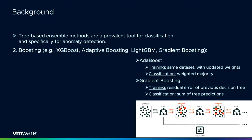The other method is the boosting method. There are many algorithms in that area, such as AdaBoost, gradient boosting, XGBoost, LightGBM, and others. The main idea is to train each decision tree according to the classification result of the previous one. In AdaBoost, we train using the same dataset but with different weights calibrated by the previous tree's result. In gradient boosting, we train the current tree on the residual error of the previous tree. The final classification is a weighted majority for AdaBoost, or the sum of all tree predictions for gradient boosting.